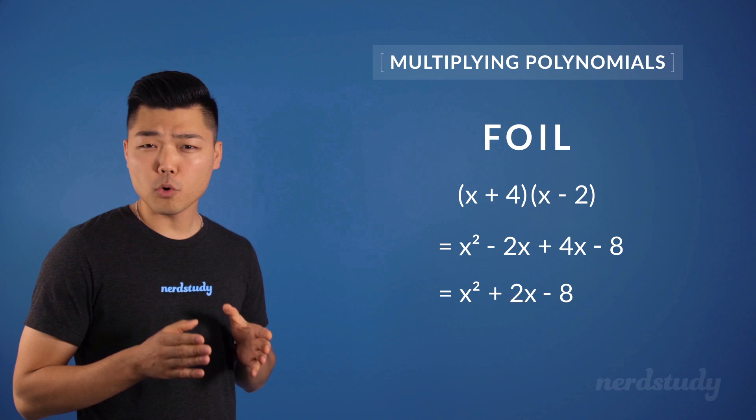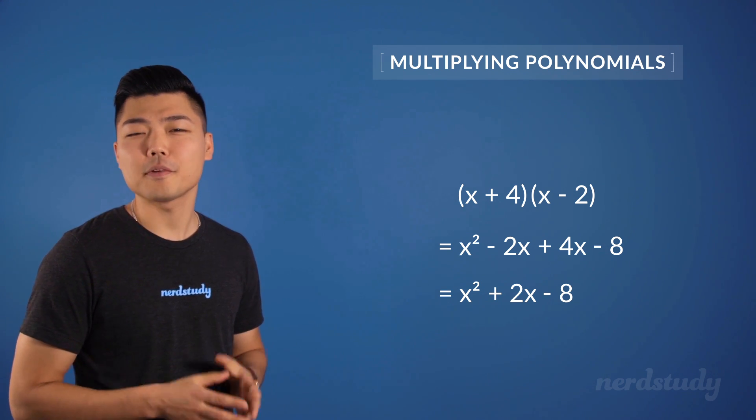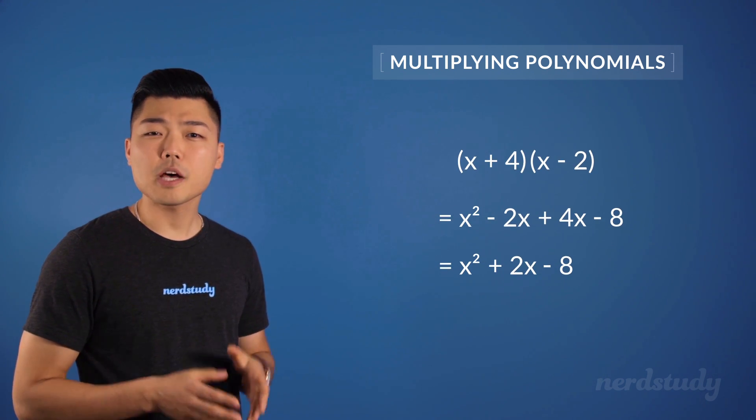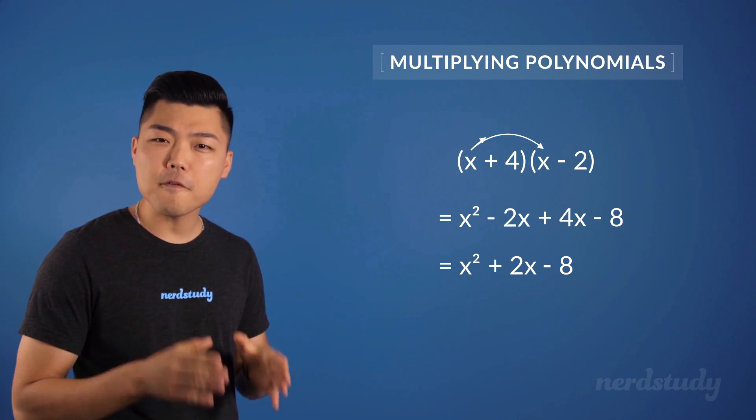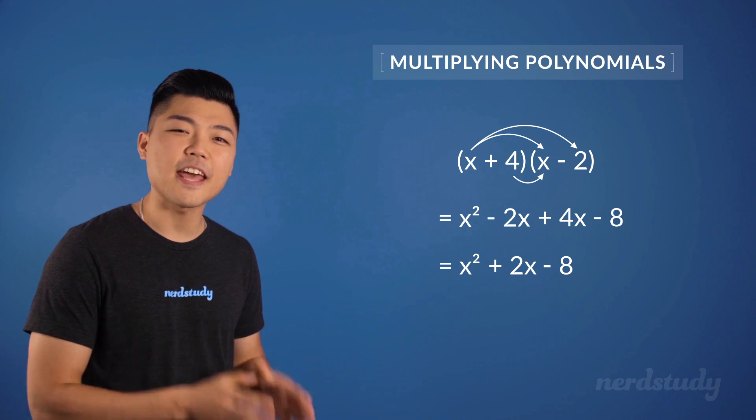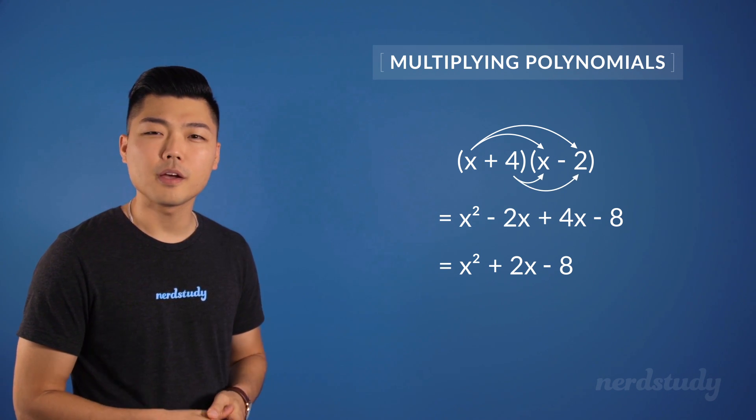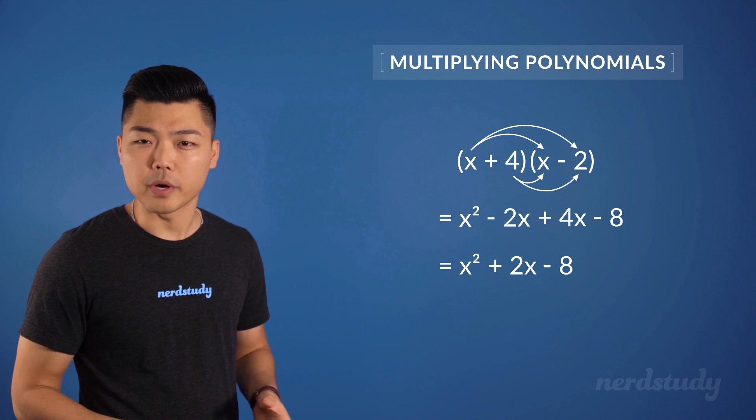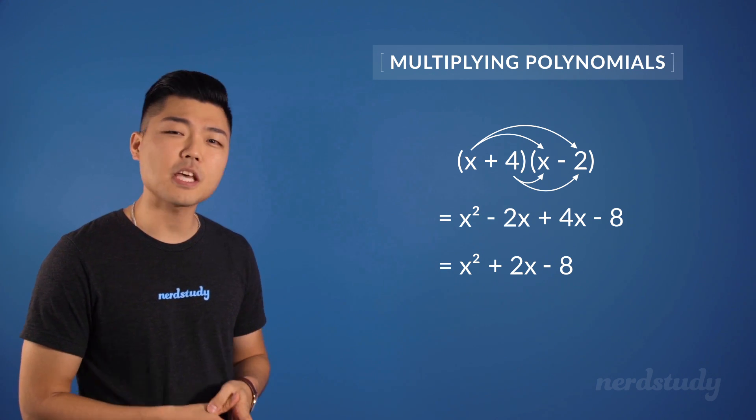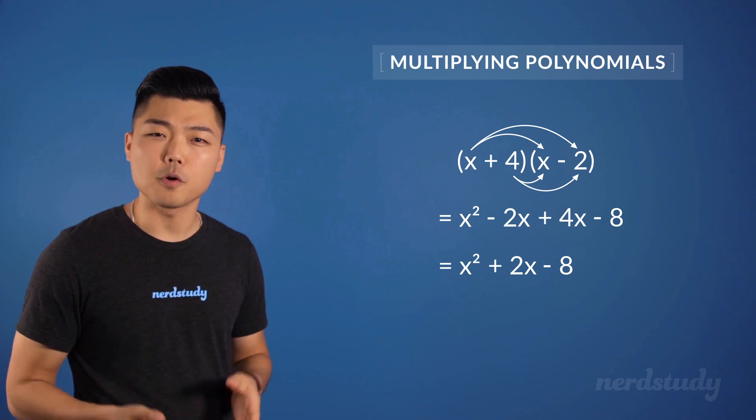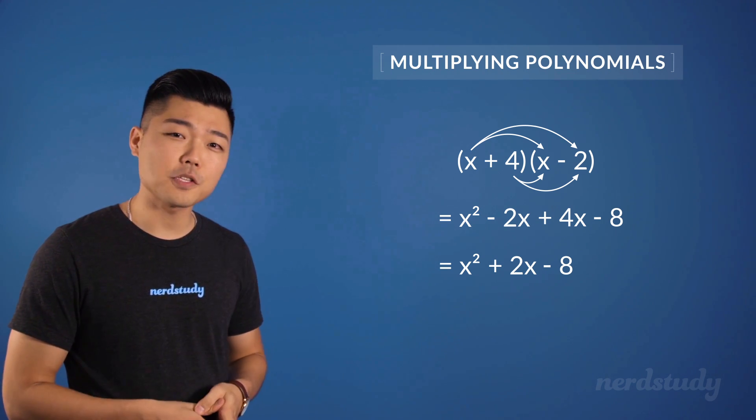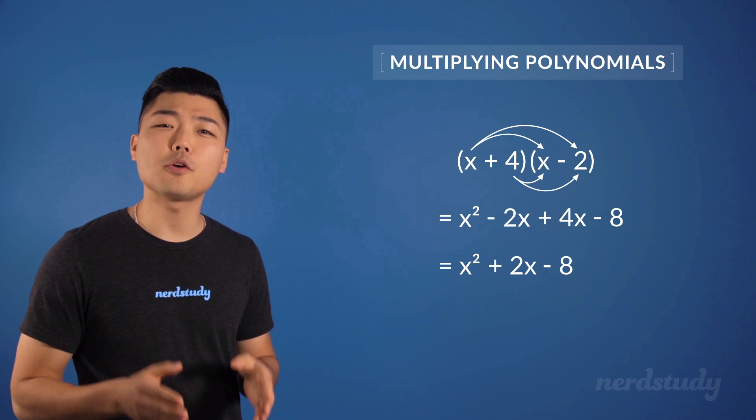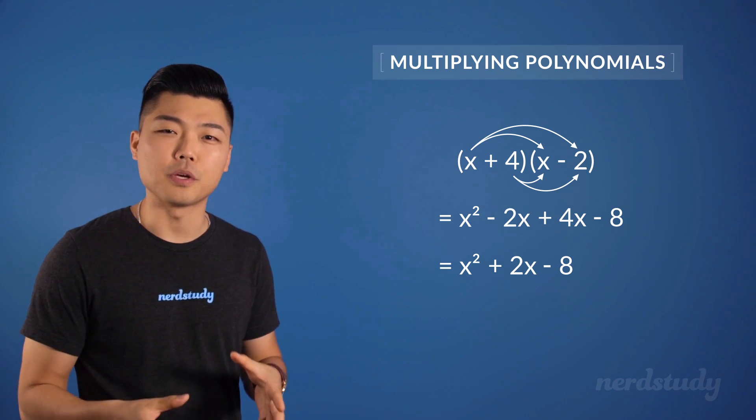But perhaps a more comprehensive way to look at it is this. Notice how every single term within the first polynomial is being multiplied with every single term within the next polynomial. The good thing about thinking this way, although it does yield the same result that the FOIL method would have yielded, is that this method allows for us to easily multiply binomials and trinomials together.